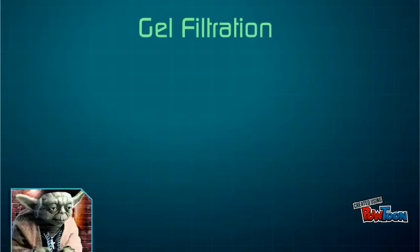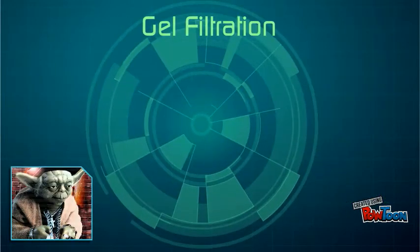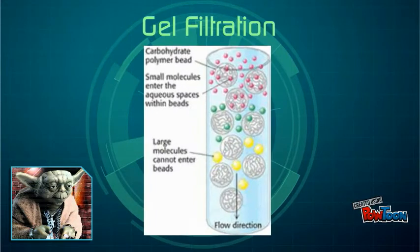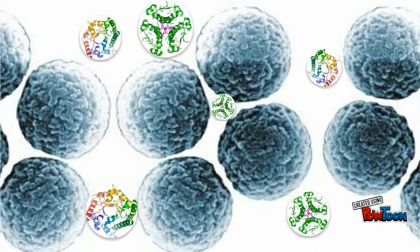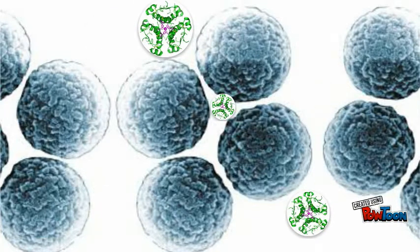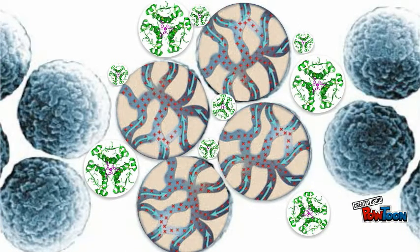Let's start with gel filtration, also known as size exclusion. Known as the simplest form of column chromatography, this column takes advantage of a molecule's size to separate it from others. A column works by allowing a solution of molecules into a gel which contains small beads. These beads have properties that allow them to separate molecules based on their physical and chemical traits. In gel filtration, these beads have small channels meandering through them.